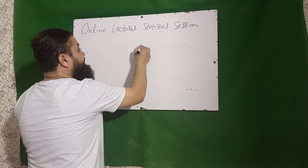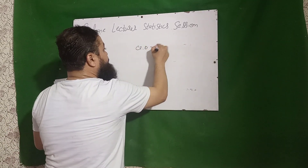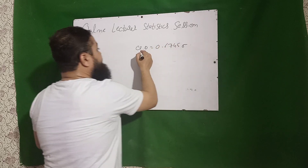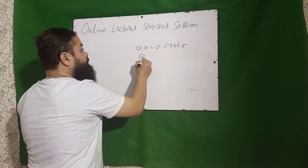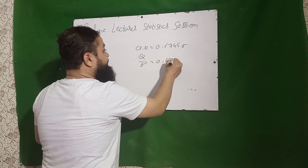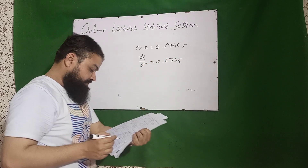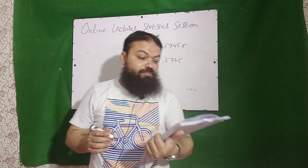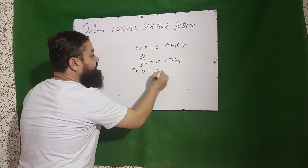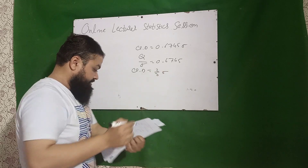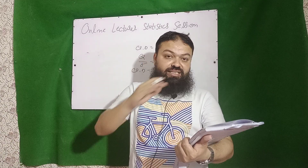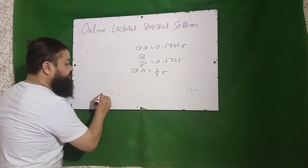A very important question: in normal distribution, quartile deviation equals 0.6745 sigma — also called probable error. Q over sigma equals 0.6745, and quartile deviation also equals (2/3) sigma. The asymptotic property of normal distribution states that the curve never touches the x-axis.